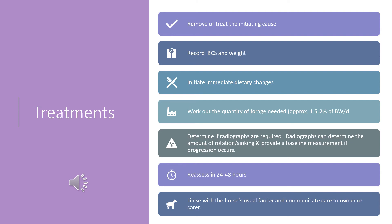Radiographs are indicated if there is a bad response to hoof testing or palpation of the coronary band. They can determine the amount of rotation or sinking and provide a baseline measurement if progression occurs. Lateral-medial views of all four feet are suggested to capture the dorsal hoof wall and the point of the frog. Reassess in 24 to 48 hours depending on severity and cause. Communicate with the horse's regular farrier and the owner or caregiver. Importantly, do not starve these animals — especially obese ponies and donkeys, who have a high risk of hyperlipemia — but maintain a controlled diet.